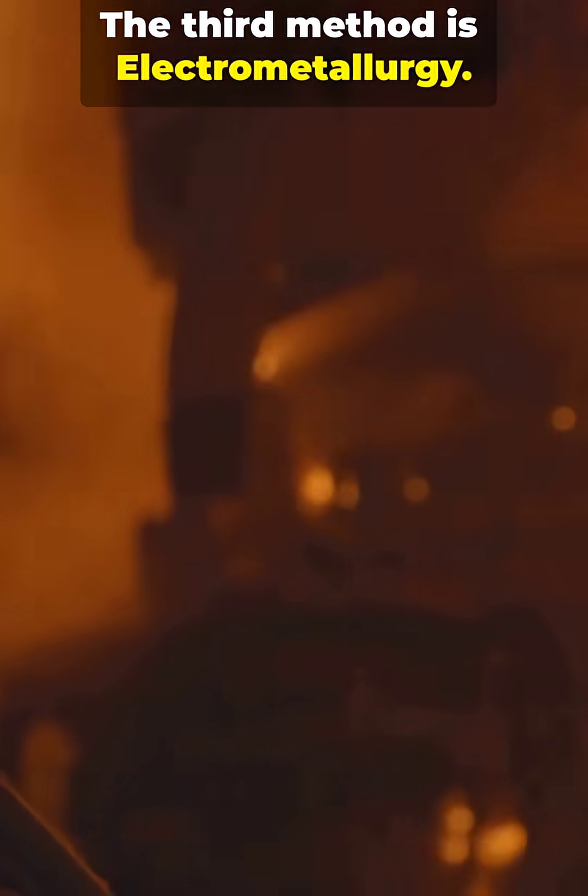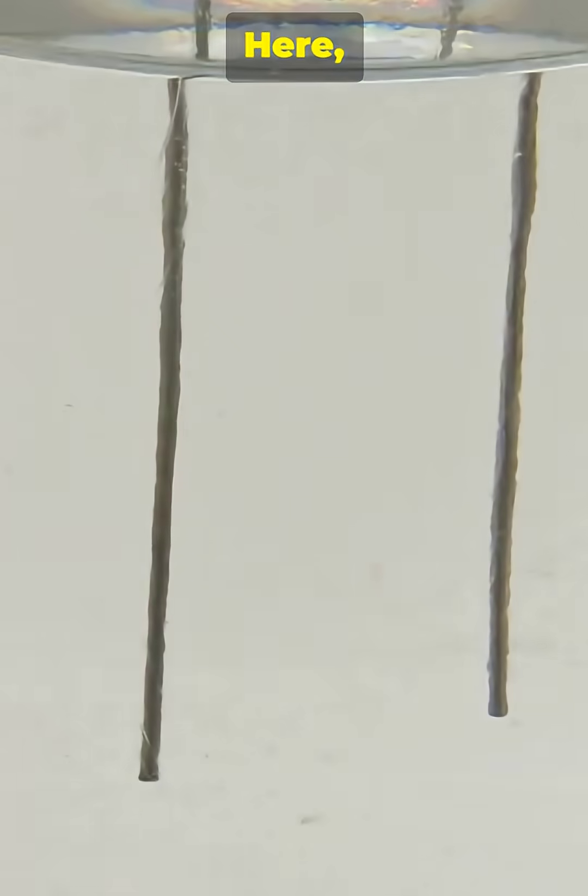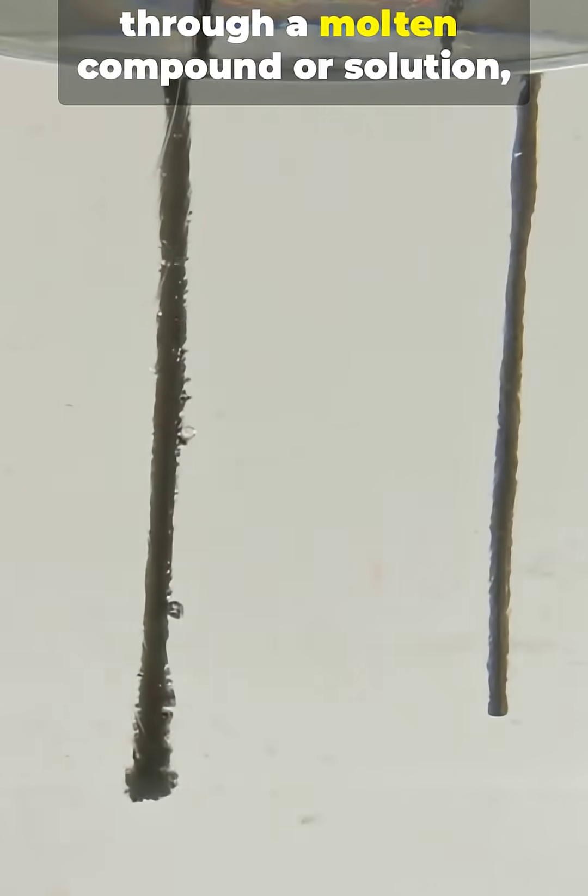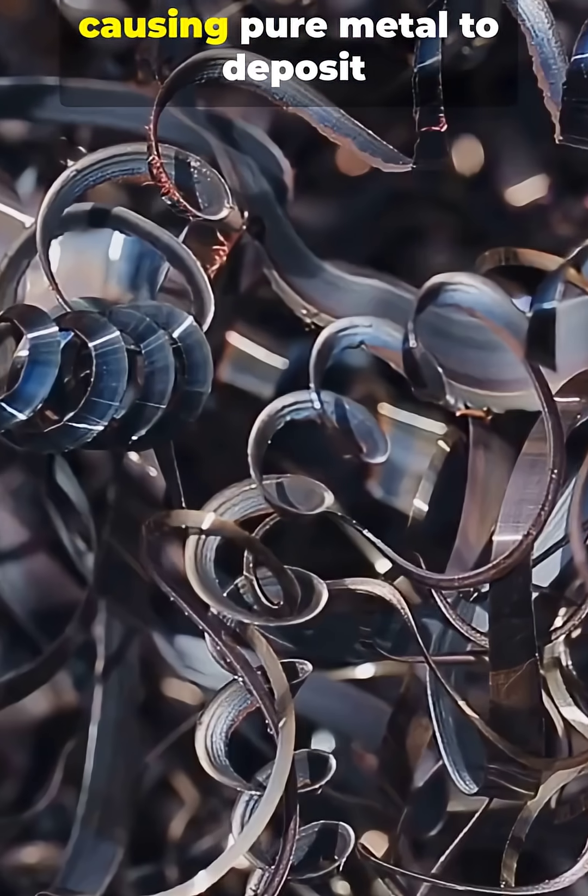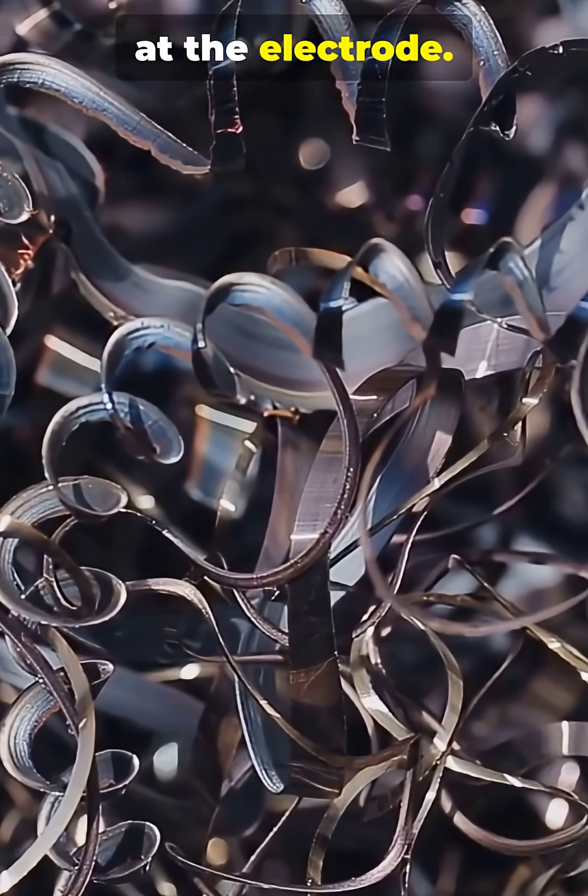The third method is electrometallurgy. Here, electric current is passed through a molten compound or solution, causing pure metal to deposit at the electrode.